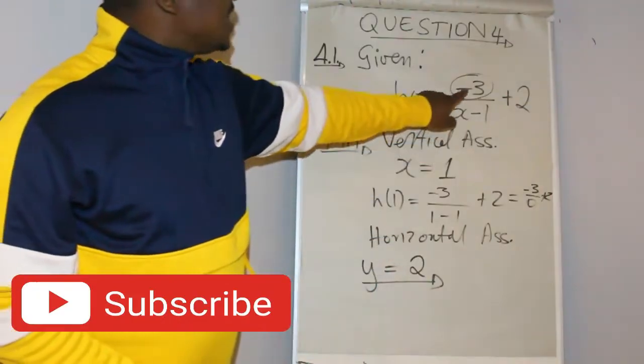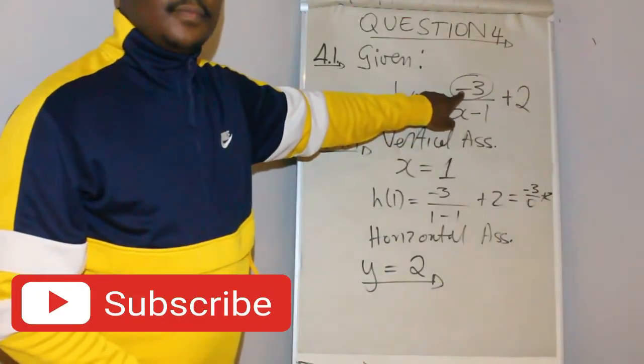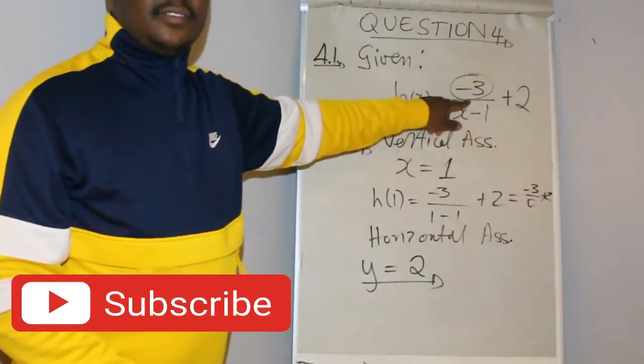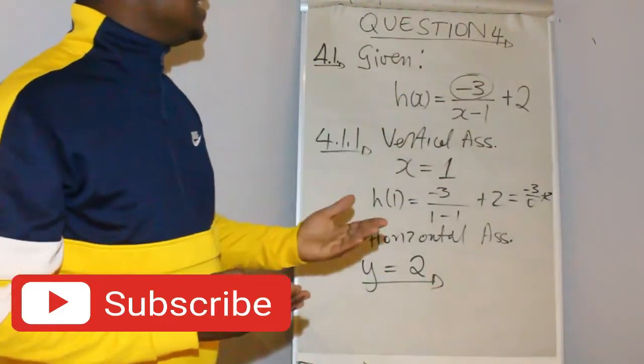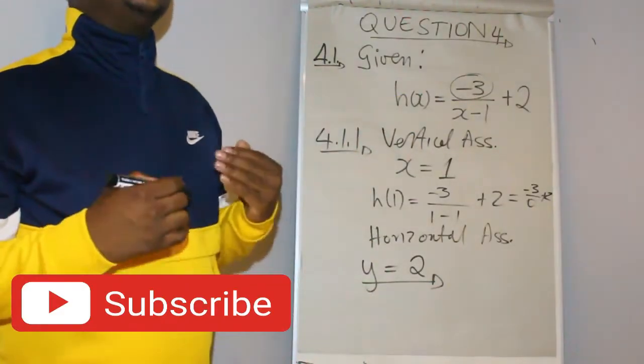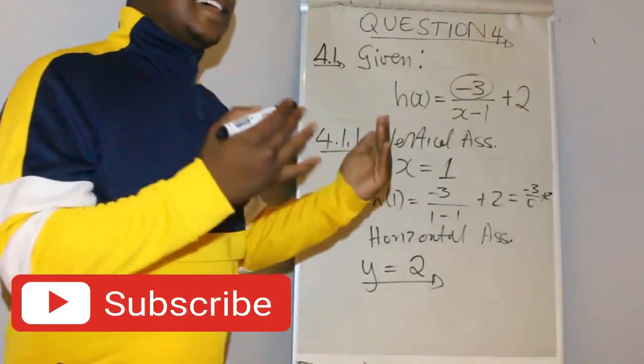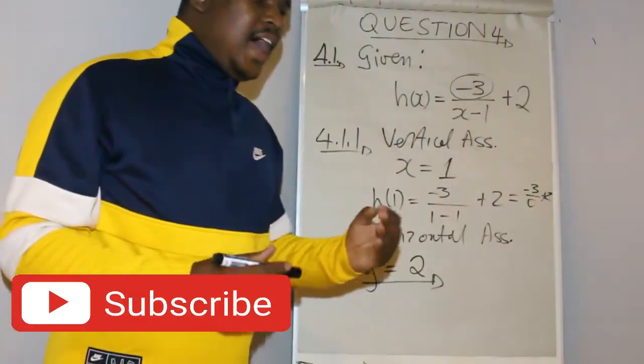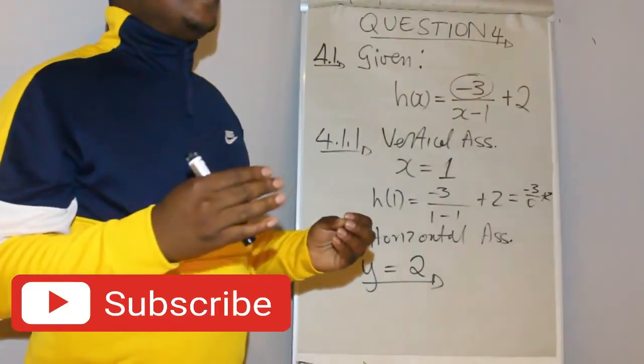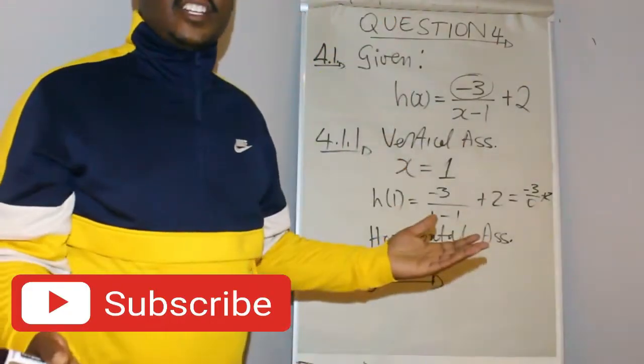If this graph is negative, if your function is negative, then what that means is your graph will be negative. That means you must use the line that has a negative gradient.